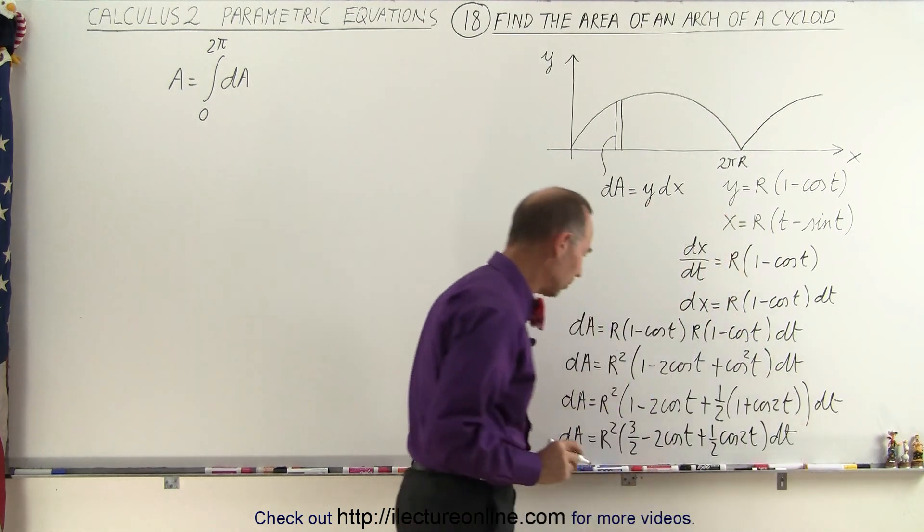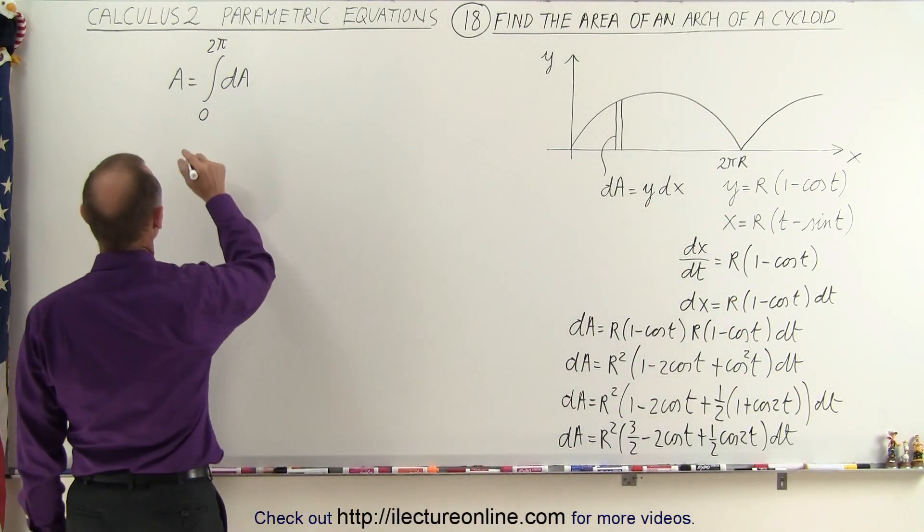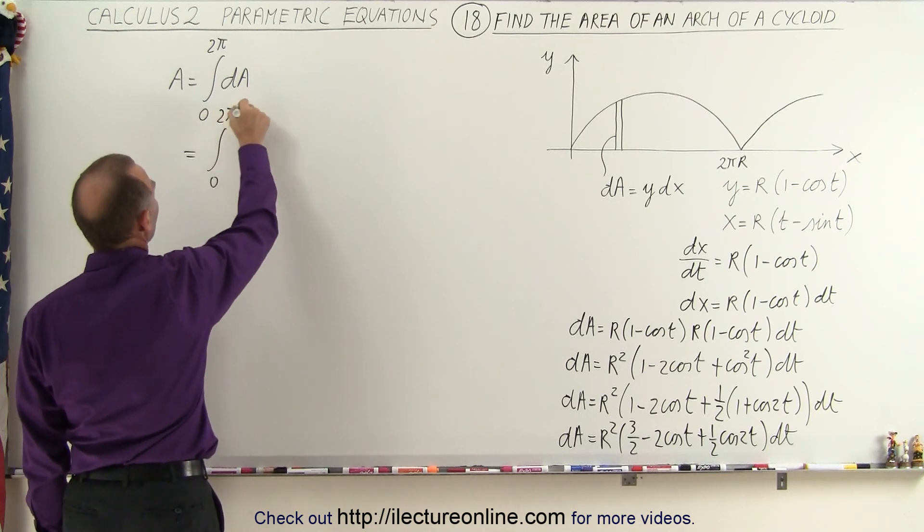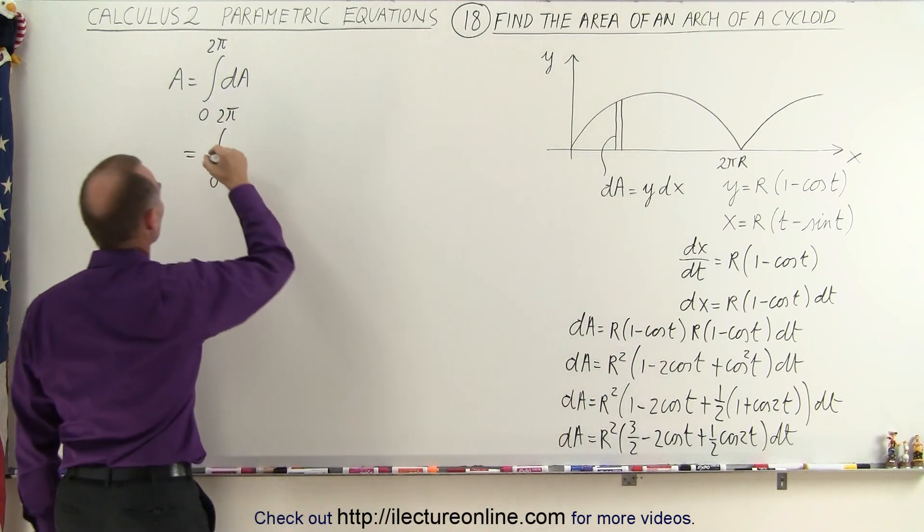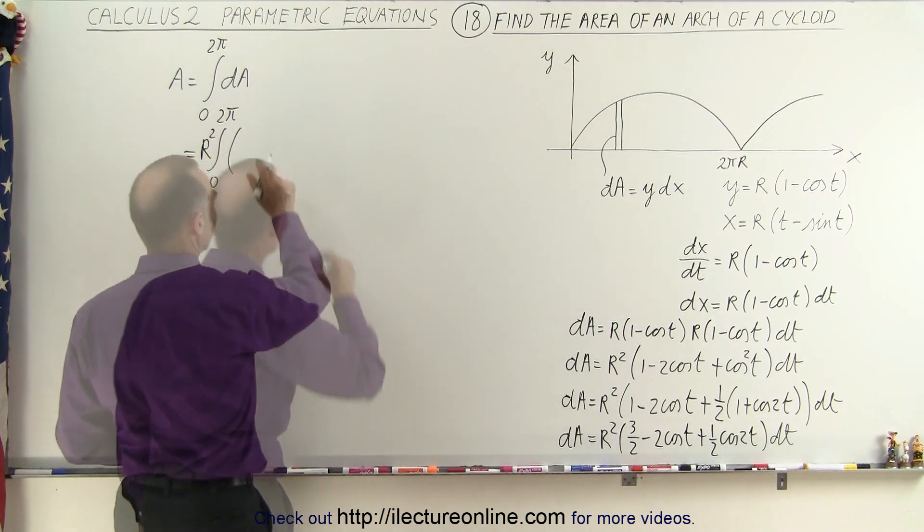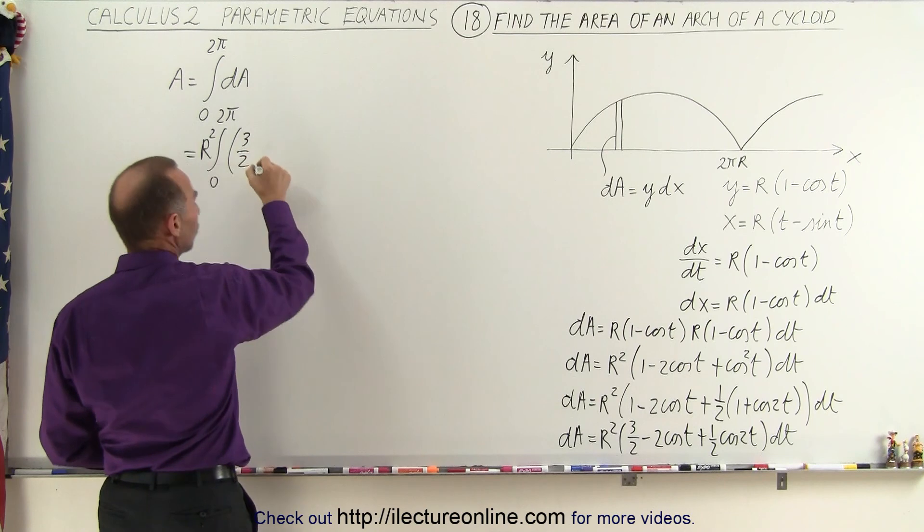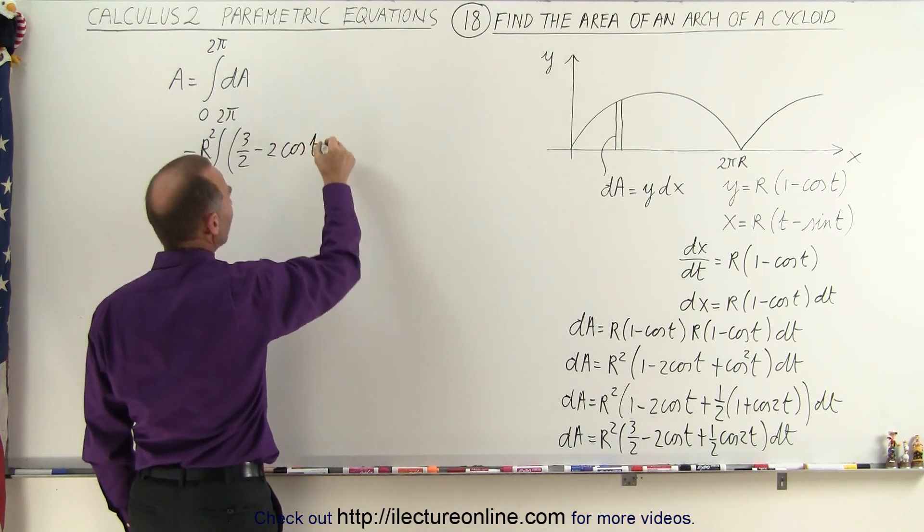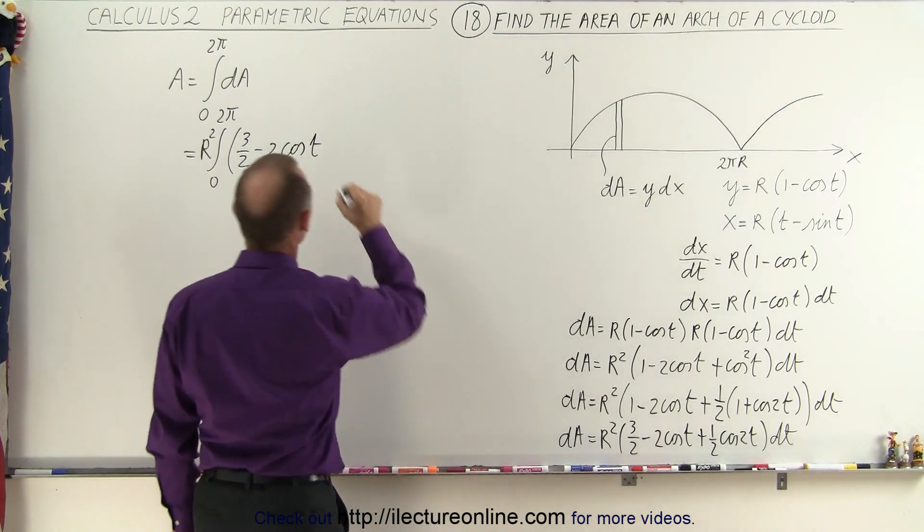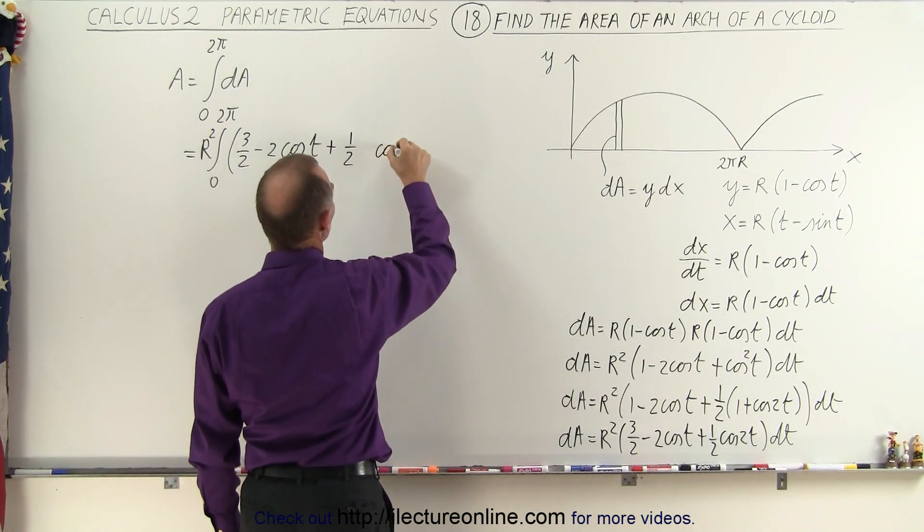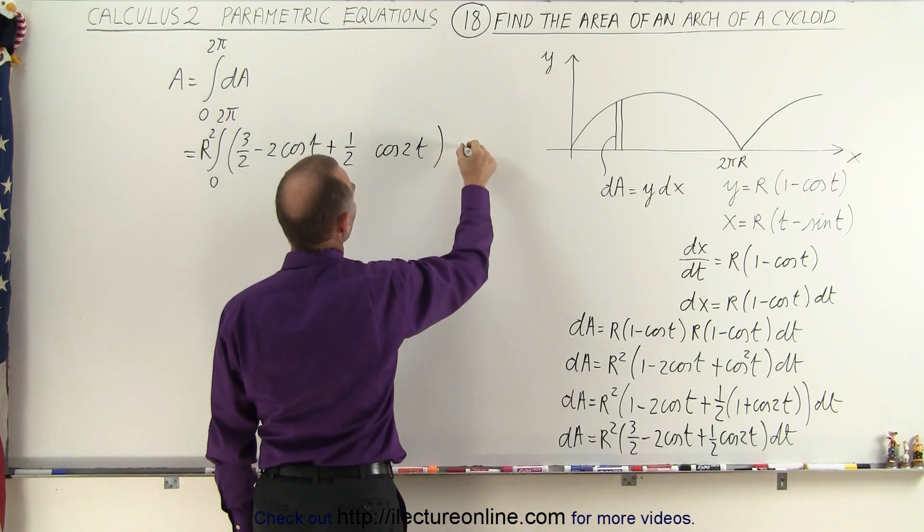Now I think we're ready to plug that into our integral. Let's go ahead and do that here, so this is equal to the integral from 0 to 2 pi. The r squared can come out so we'll put that in front: r squared times 3 over 2 minus 2 times the cosine of t and then plus one half times the cosine of 2t times dt.